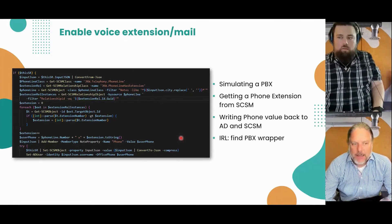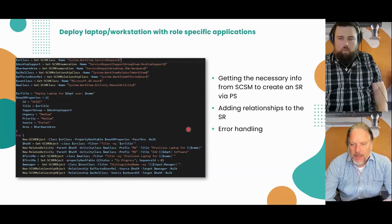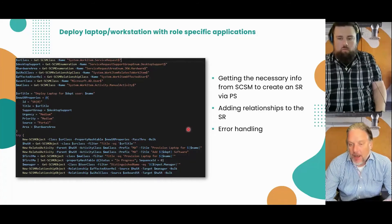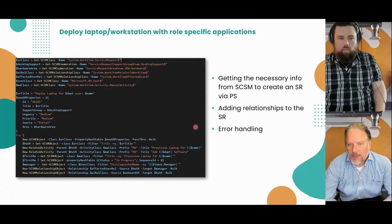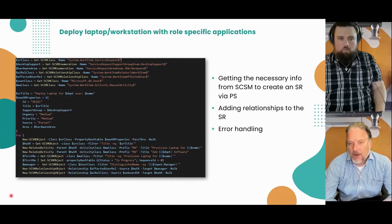Our next step in our workflow: we need to assign a laptop or workstation to the new user. This is a request that goes to our IT department and can't be fully automated — they actually need to go hands-on, grab a laptop, deploy software on it, and all those things. We need to capture that somehow in the workflow. In addition, we need to make sure the user gets the software they need to do their job, but at the same time does not have access to software unnecessary for their specific role.